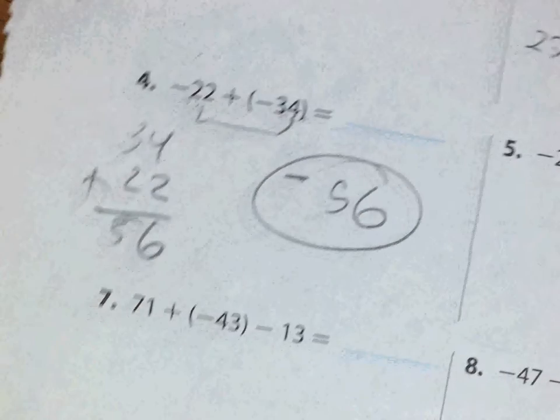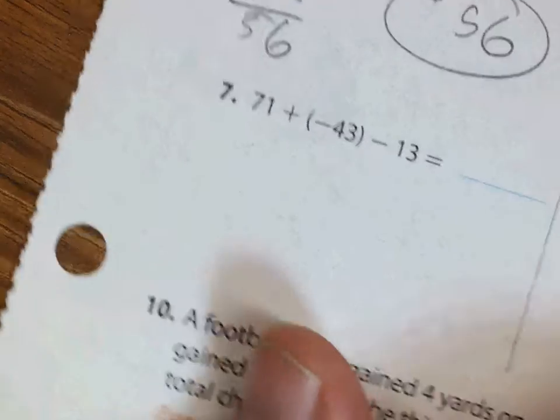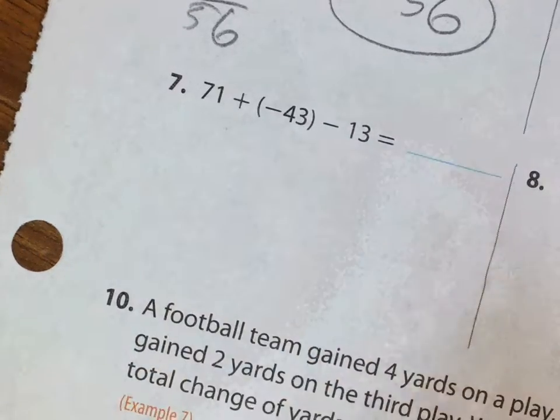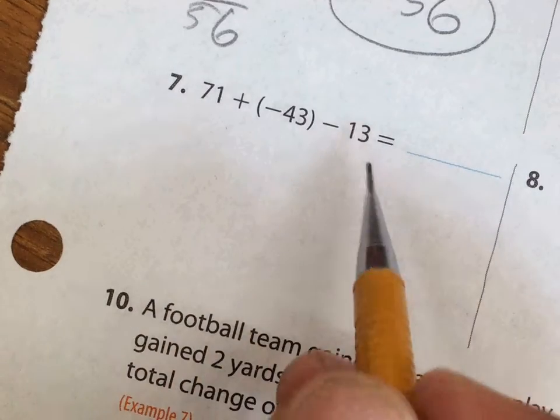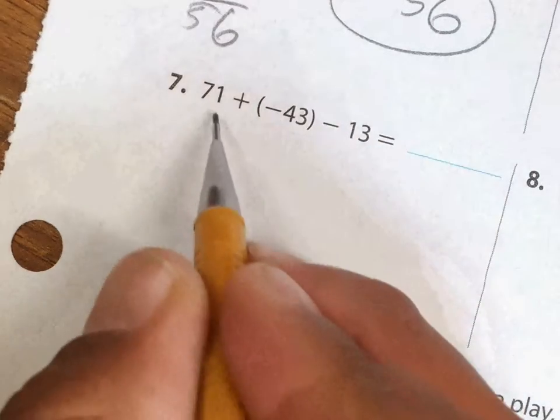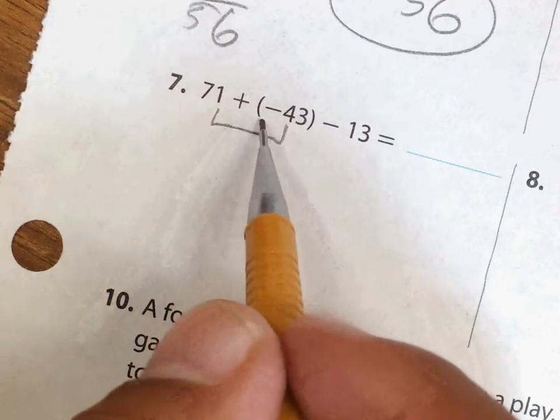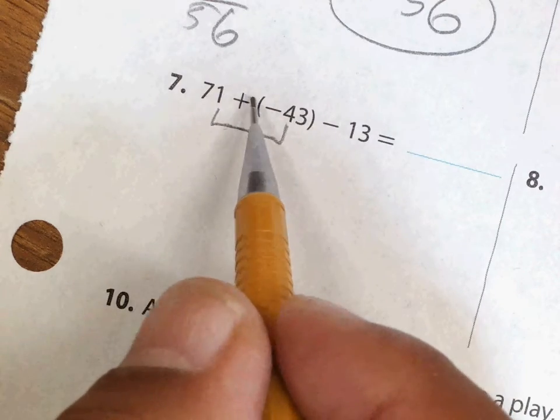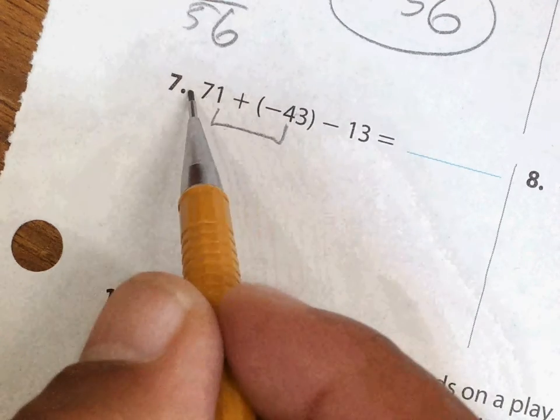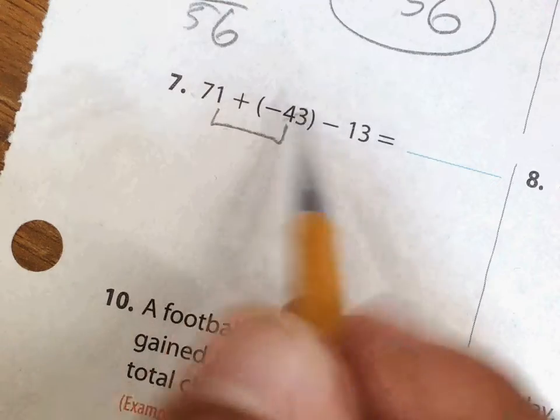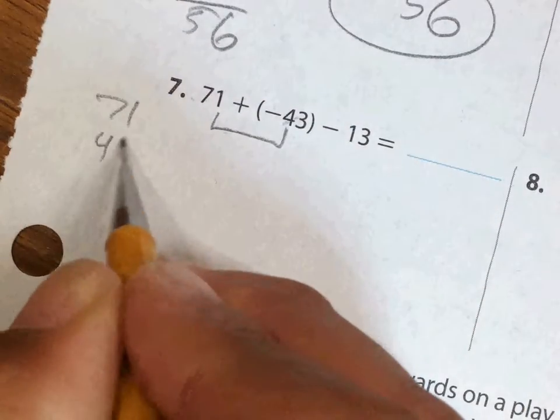All right, I'm gonna look at one of the ones at the bottom here, number seven. You have three numbers. Don't try to do them all at once—do two at a time, like those two. The operation is addition, so think same sign add, different signs subtract. There are different signs, so subtract them: 71 minus 43.